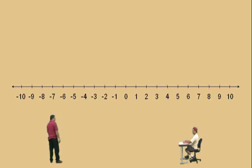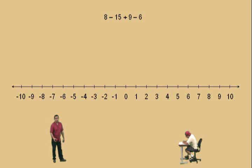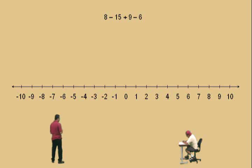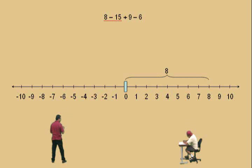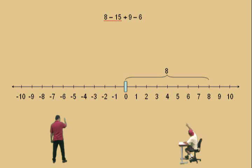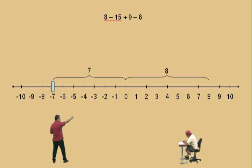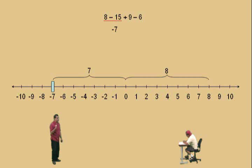We're going to do another problem: eight subtract fifteen plus nine subtract six. We're going to work left to right. Later in the semester, when we learn more about adding negative numbers, we'll learn other techniques to approach this problem. For now, just work left to right. Eight subtract fifteen — we start at eight, move eight units to the left to reach zero, but we're subtracting fifteen, so we move seven more, because eight plus seven is fifteen. Eight subtract fifteen gives us negative seven.